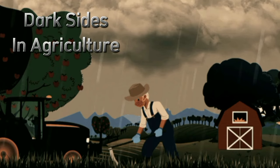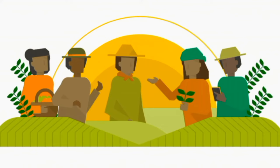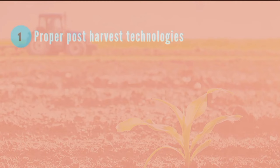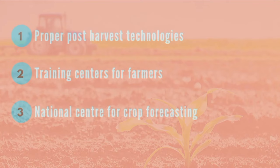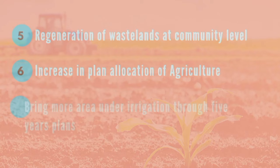There are also dark sides in agriculture: capital inadequacy, lack of infrastructure, constraints in demand side, insufficiency in input subsidies, and agri-expenditure. Suggestions include proper post-harvest technologies, training centers for farmers, a national center for crop forecasting, integrated crop insurance schemes, regeneration of waste lands at community level, increasing plan allocation for agriculture, and bringing more area under irrigation through five-year plans.